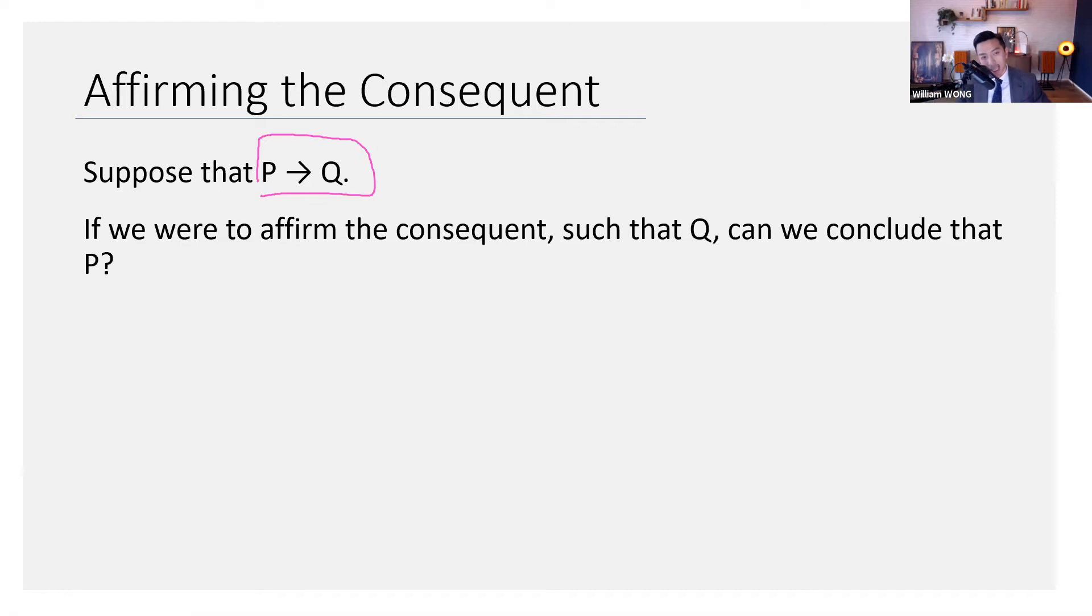So P is the antecedent here, Q is the consequent. Now, to affirm the consequent is exactly as it sounds. You assert Q. Of course, when Q is the consequent, you assert Q. If the consequent is something else, say T, then you assert T.